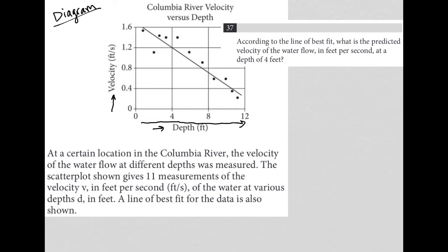The information says at a certain location on the Columbia River, the velocity of the water flow at different depths was measured. The scatter plot shown gives 11 measurements of the velocity V in feet per second of the water at various depths D in feet. A line of best fit for the data is also shown. So pretty much what we expected by just looking at it. Question 37 says,